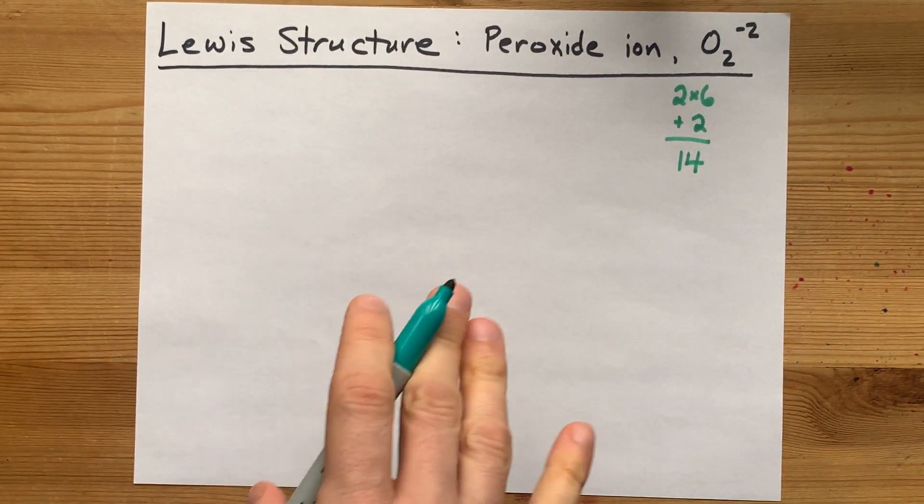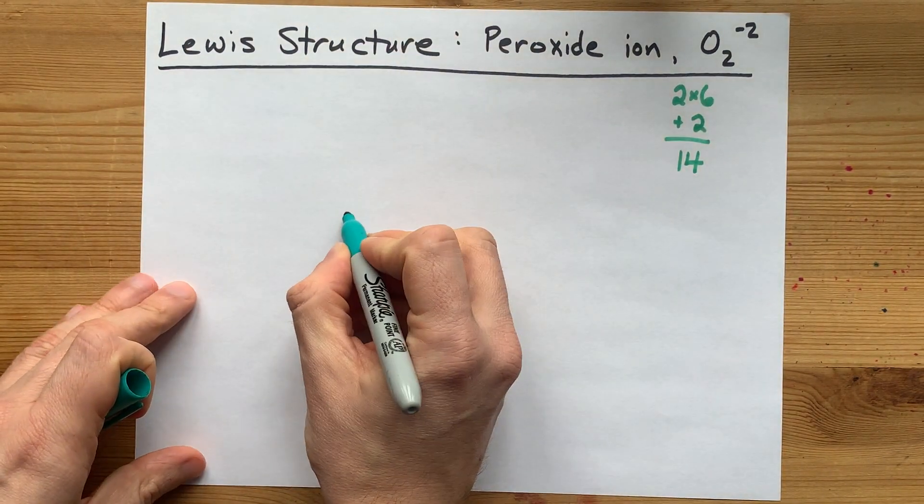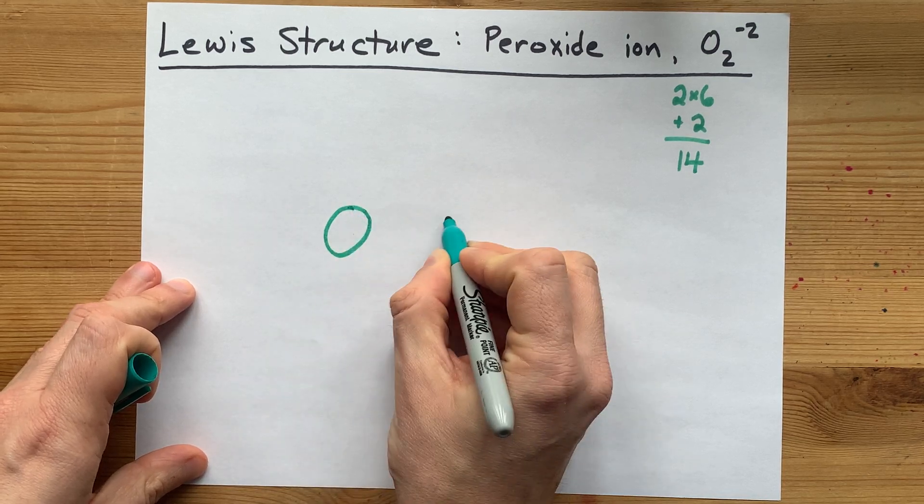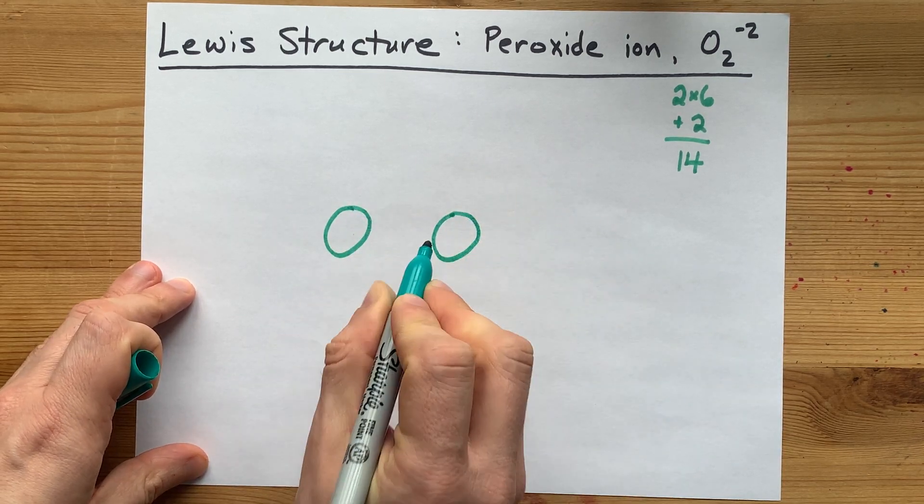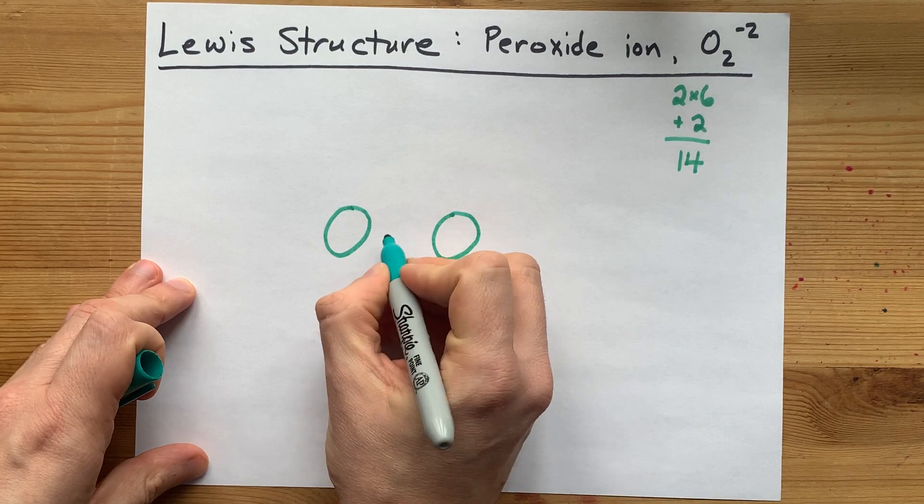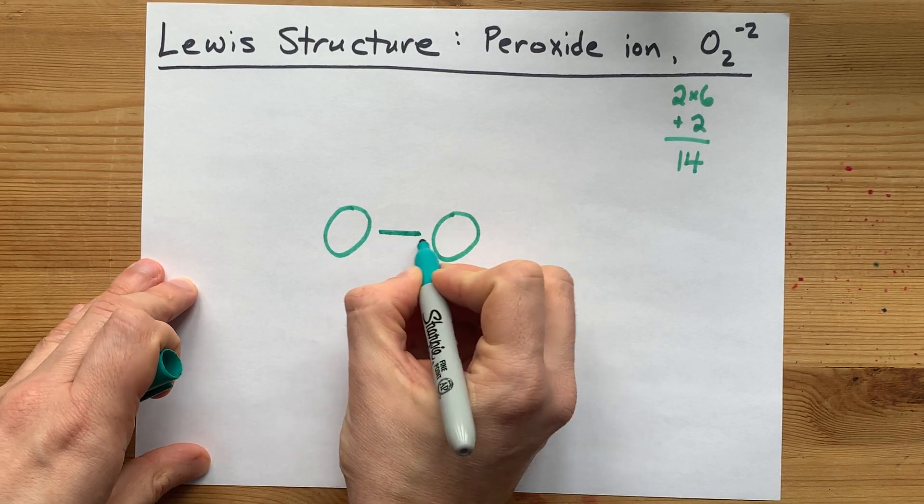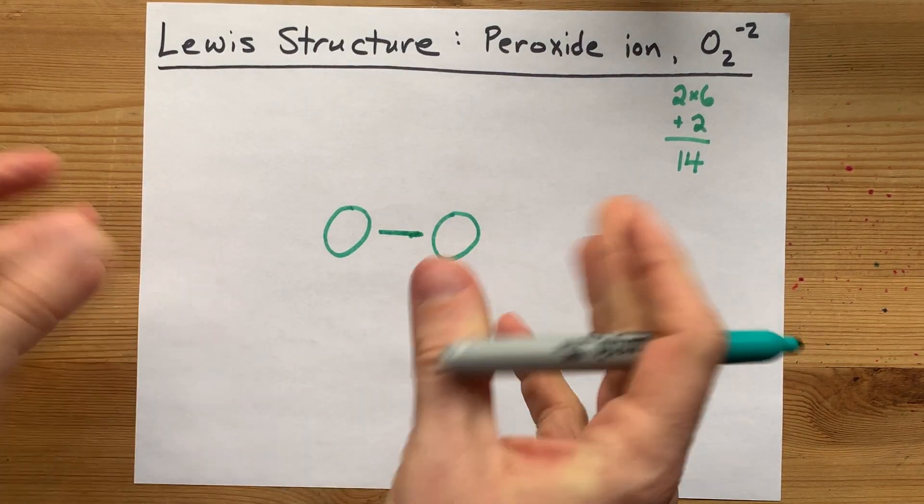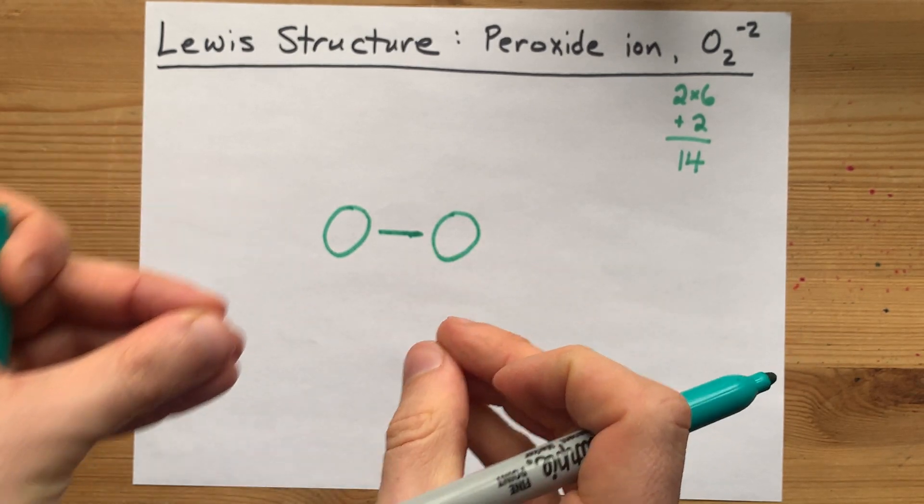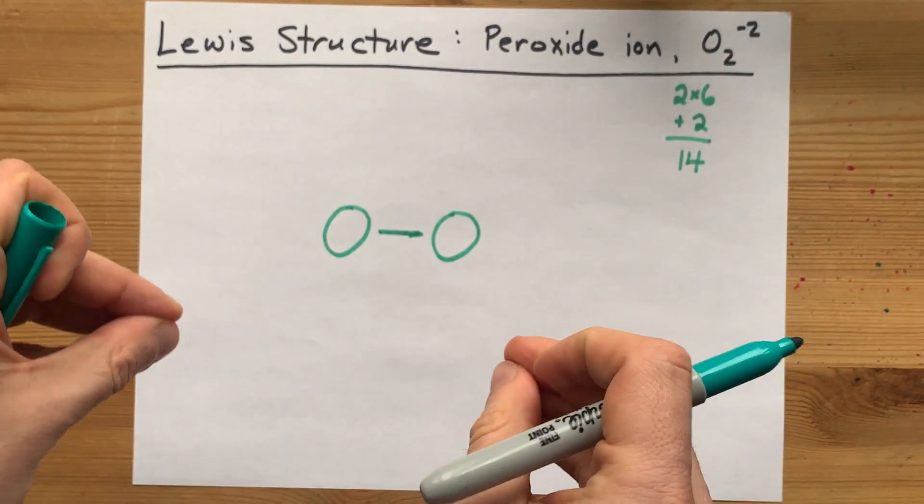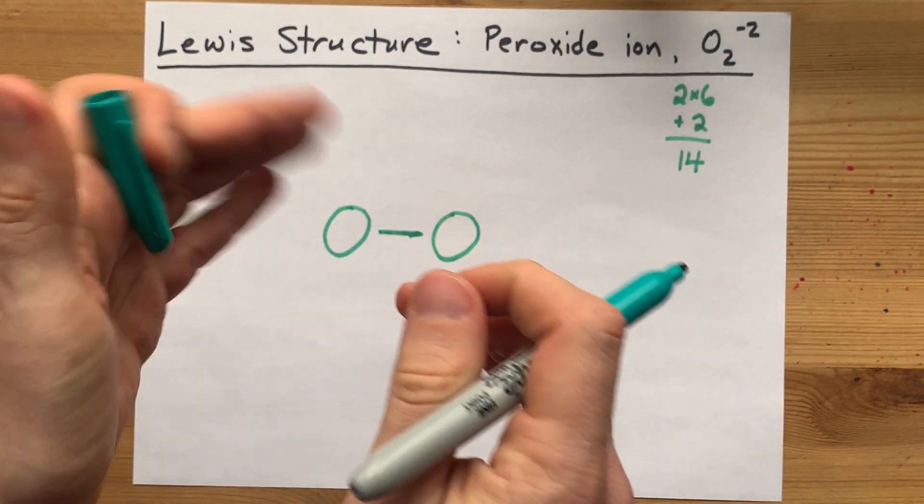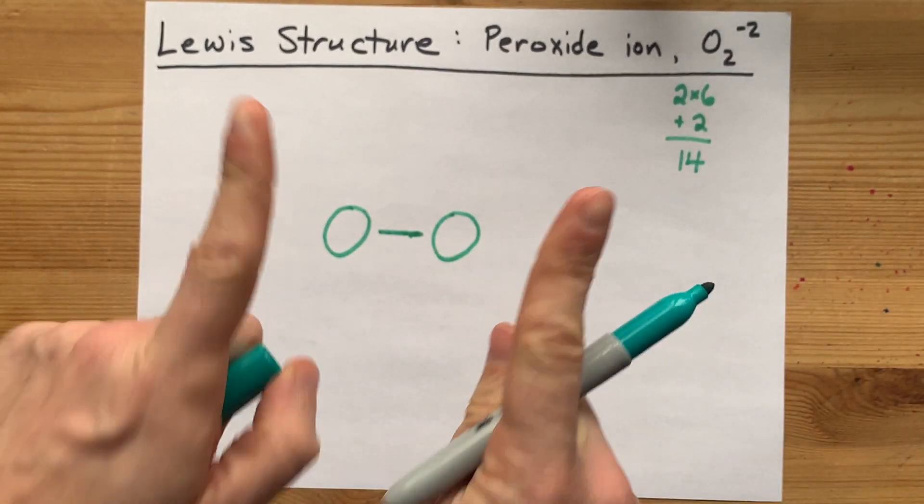To figure out what the structure is here, draw the two oxygens and connect them with a single bond. I always connect my atoms with a single bond to start with because if I need more bonds to satisfy the octet rule, I can just add them in from lone pairs. But I always start with singles.